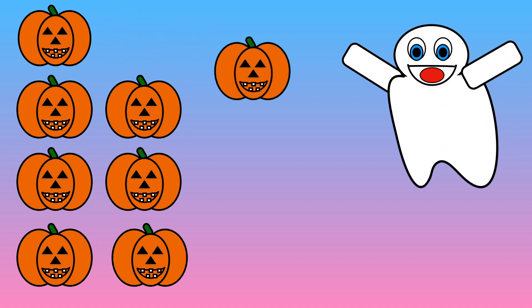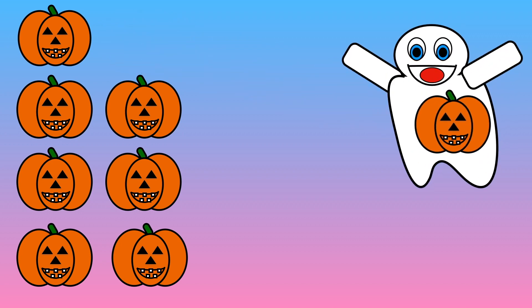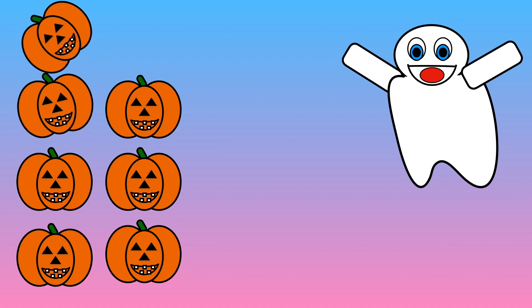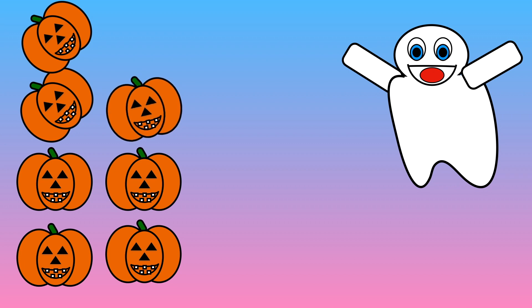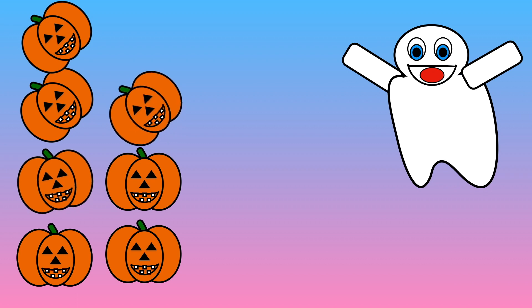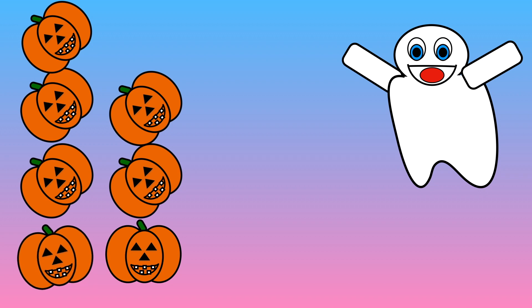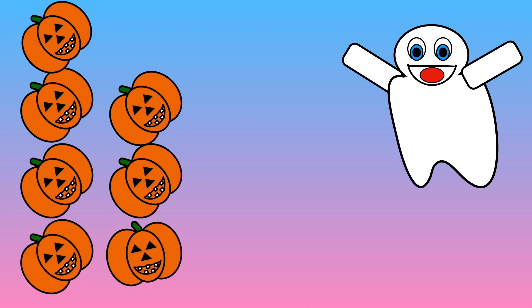There are eight pumpkins. A ghost comes along and takes one away. How many pumpkins are left? One, two, three, four, five, six, seven. Seven pumpkins are left. One less than eight is seven.